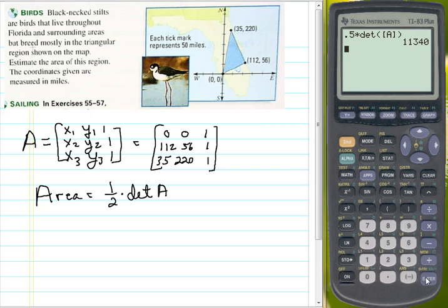And we now just press enter, and we get this area, our number of 11,340. That tells me the area of this triangle was 11,340 square miles.